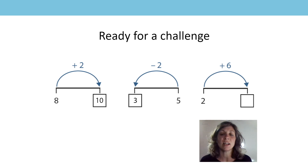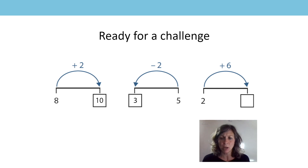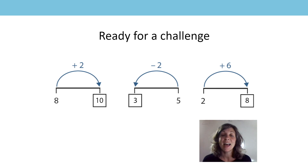This is a little bit more tricky now. I've got 2 plus 6. I know if I change the order of the addends the sum remains the same, so I'm going to think of it as 6 plus 2. So that will be the next even number, which is 8.